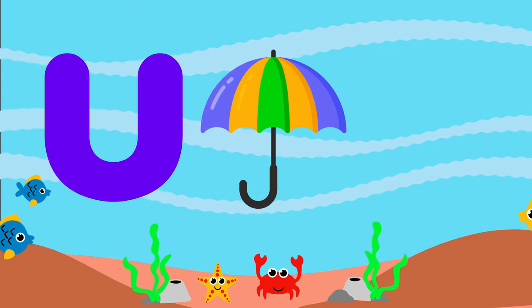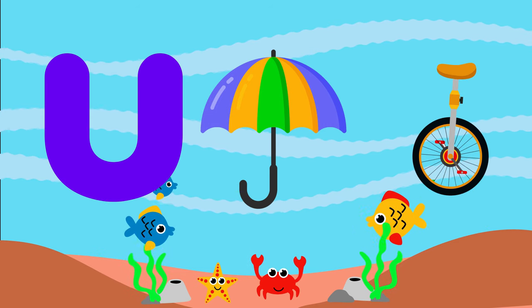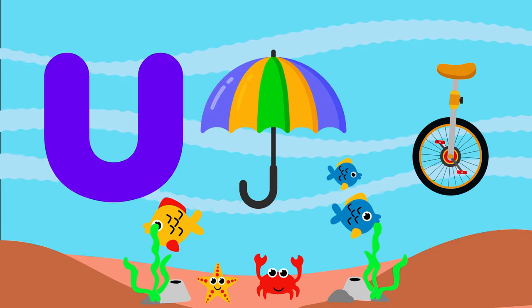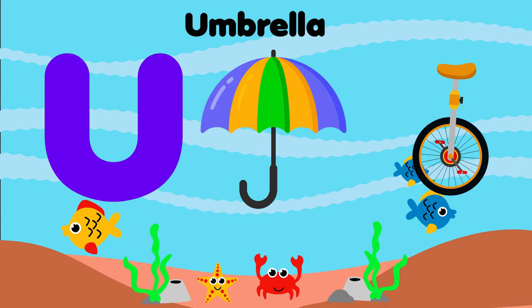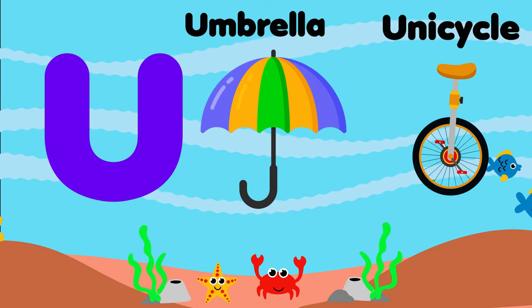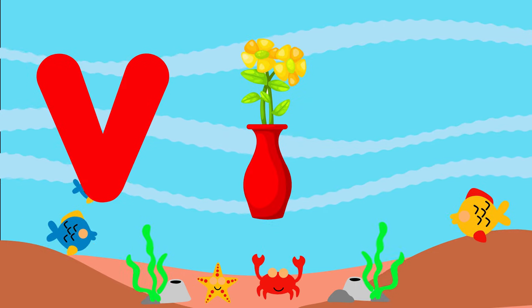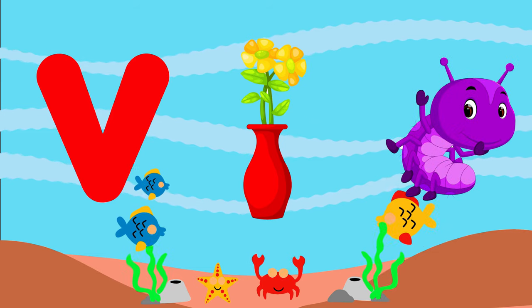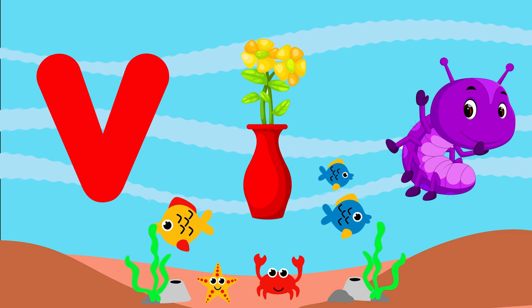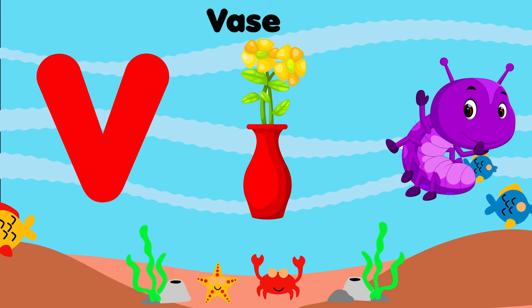U is for umbrella. V is for vase. V, v, vase. V is for violet. V, v, violet. V is for v, v, vase. V is for v, v, violet.